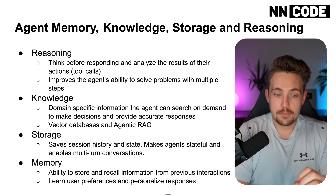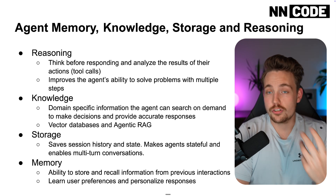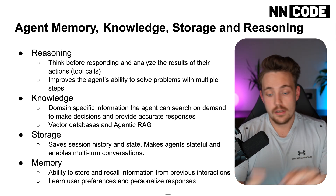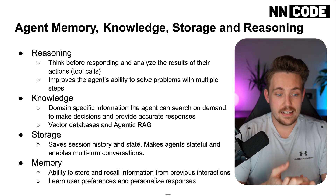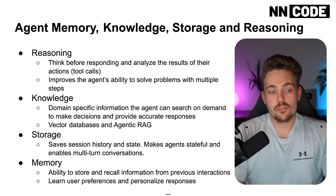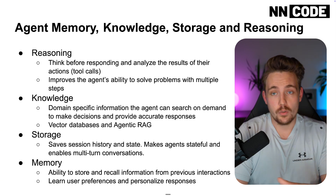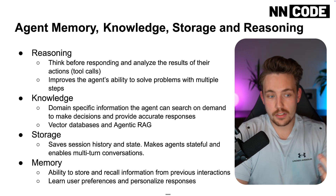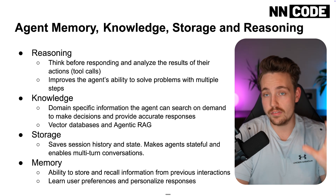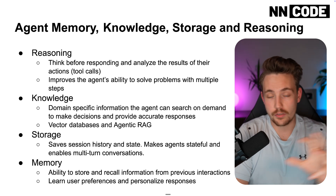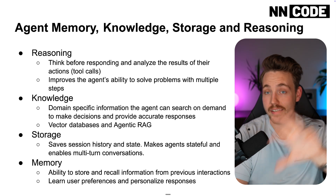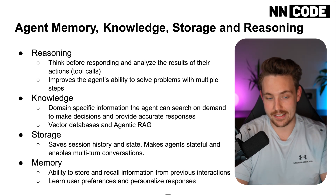Then we have knowledge — the specific information the agent can search on demand. That could be different databases, files, data, tables, any database, pretty much any storage that is specific. We can wrap a tool around it to give the agent access. We can directly connect a RAG system — a retrieval augmented generation system — where we basically just have a table with our documents and the agent can access it.